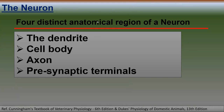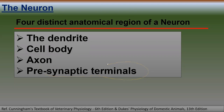The neuron has four distinct anatomical regions: the dendrite, cell body, axon, and presynaptic terminal. These four anatomical regions are very important for processing information. The dendrites receive signals; the cell body produces proteins and macromolecules necessary for neuronal function; the axon carries information to other neurons; and the presynaptic terminal forms synapses with other neurons or muscle membranes.